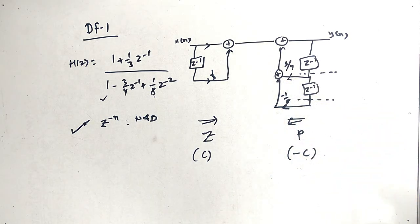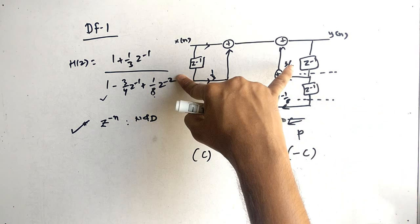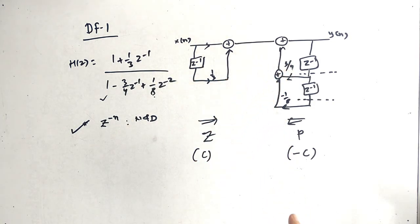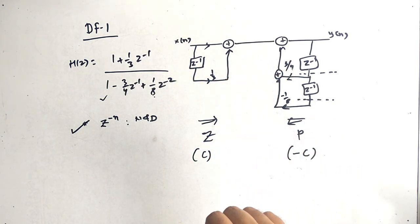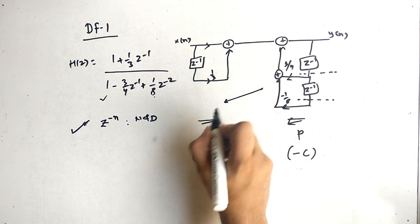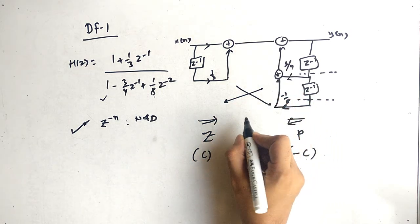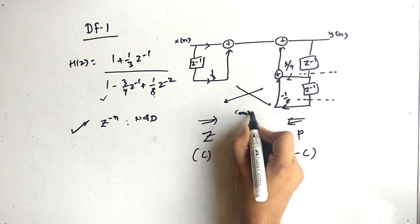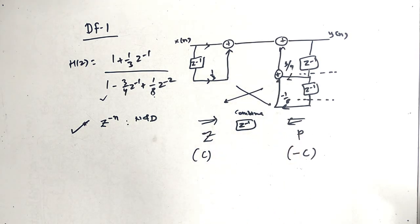So this is the direct form 1 structure. You can see the delay terms are greater. Now we can reduce this using the direct form 2 structure. What we do is take the poles here, take the zeros here, and combine the delay part. This is the direct form 2 structure.